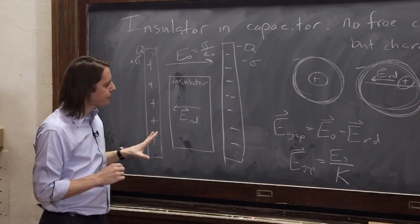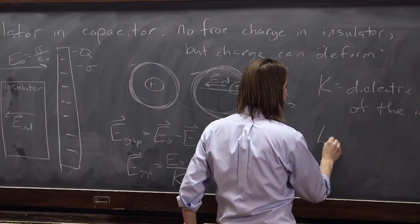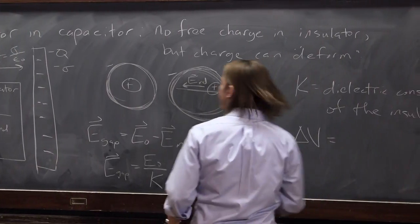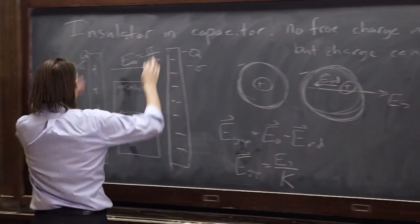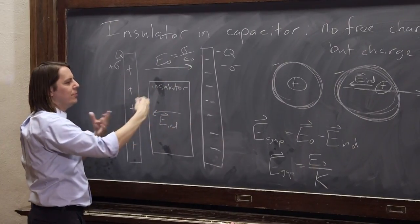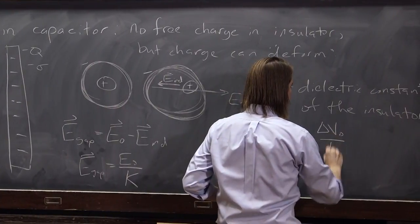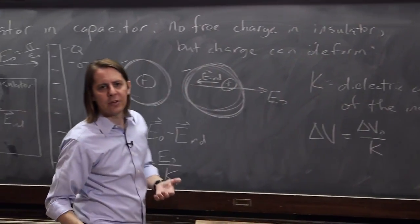In terms of the capacitor, though, what this tells us is we had a delta V naught, but then the delta V, the voltage it takes to build up a certain charge difference, or thinking the other way, if you put on a certain charge, the amount of voltage that builds up, it's actually going to be delta V naught over the dielectric constant.